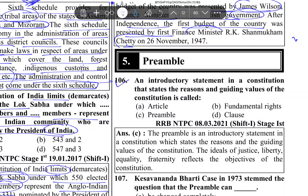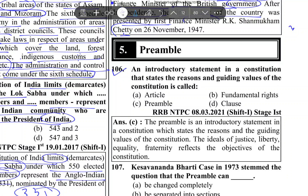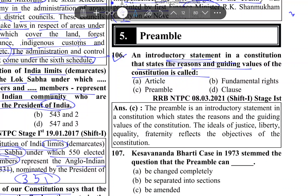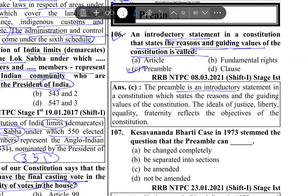First, question 106. This is the first question: An introductory statement in a constitution that states the reason and guiding values of the constitution is called — what do we call this? This is the preamble. So what is the preamble? An introductory statement in a constitution that states the reasons and guiding values of the constitution.